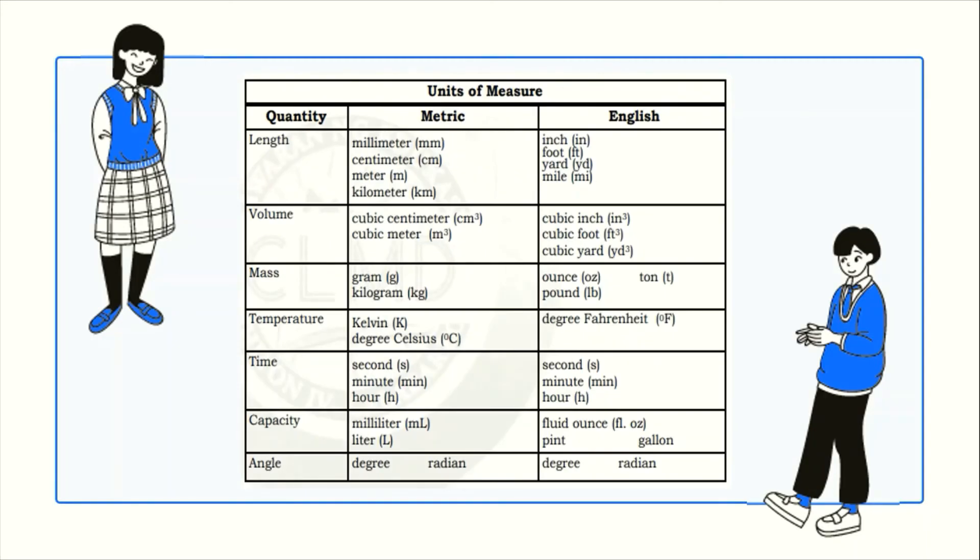Here are some of the units of measure for both metric and English. Ito yung mga quantities na ating sinusukat. We have length, volume, mass, temperature, time, capacity, and angle. Meron silang mga units of measure sa metric and English.